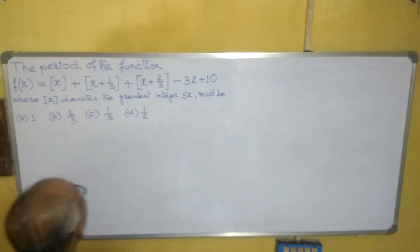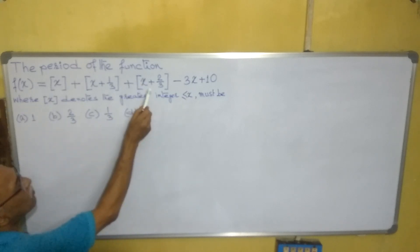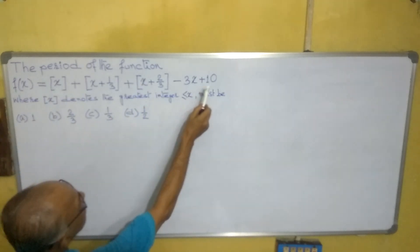Welcome. See this problem. The period of the function f(x) = [x] + [x + 1/3] + [x + 2/3] - 3x + 10, where [x] denotes the greatest integer function. Which of the given options will be the period?